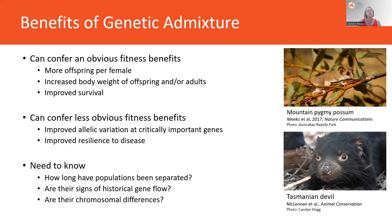Before mixing populations, key things to know include: how long have the populations been separated, are there signs of historical gene flow, and critically, are there chromosomal differences between populations if they've been separated for a long period of time.